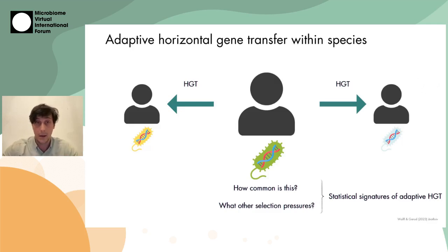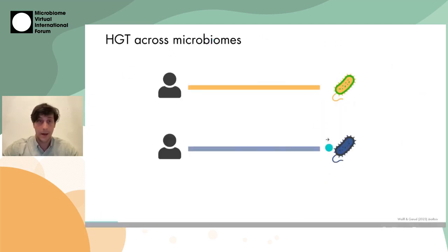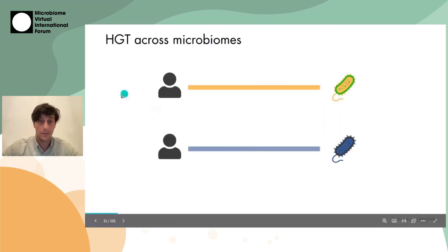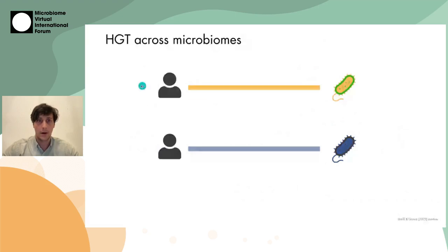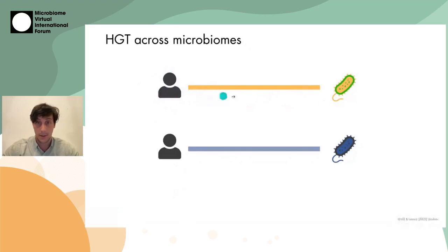That's really what our talk is about here today. To get started on some basic diagrammatic concepts: we have two hosts, and within each host, we have the genotype of a strain, which is represented with a bar. Variants that arise will be represented with circles.